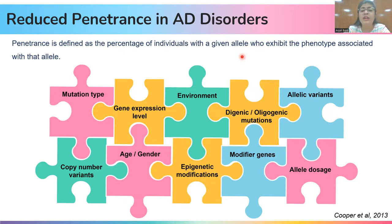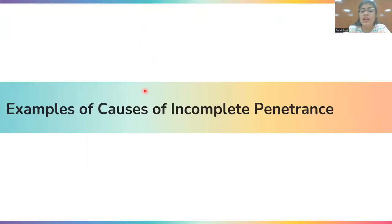There are a number of factors which result in reduced penetrance, such as mutation type, gene expression level, environment, etc. To understand this concept in detail, let us see a few examples of causes of incomplete penetrance.